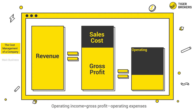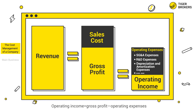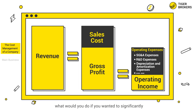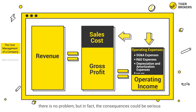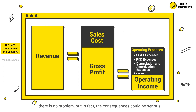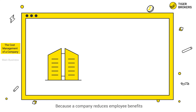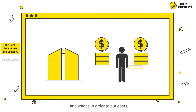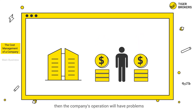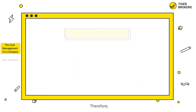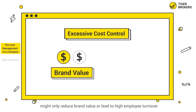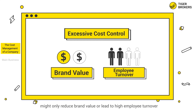Operating income equals gross profit minus operating expenses. What would you do if you wanted to significantly increase your operating income? Most people would choose to reduce sales costs and operating expenses. On the surface there's no problem, but in fact the consequences could be serious. Because if the company reduces employee benefits and wages to cut costs, the company's operations will suffer. If you were working in this company, you would surely leave. Therefore, excessive cost control might only reduce brand value or lead to high employee turnover.